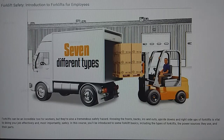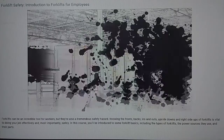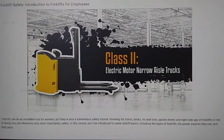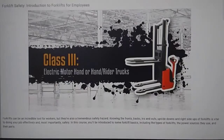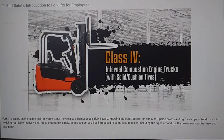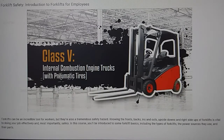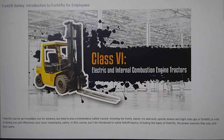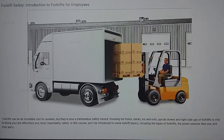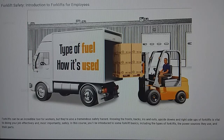There are seven different classes of powered industrial trucks. Class 1, electric motor rider trucks. Class 2, electric motor narrow aisle trucks. Class 3, electric motor hand trucks or hand rider trucks. Class 4, internal combustion engine trucks with solid cushion tires. Class 5, internal combustion engine trucks with pneumatic tires. Class 6, electric and internal combustion engine tractors. And Class 7, rough terrain forklift trucks. These classes indicate the type of fuel used by the forklift, as well as how the forklift is used.